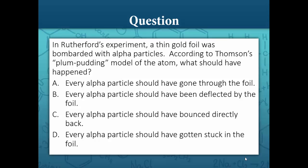Hi, this is Melanie Fine of Chem in 10. Today's question is, in Rutherford's experiment, a thin gold foil was bombarded with alpha particles. According to Thomson's plum pudding model of the atom, what should have happened?